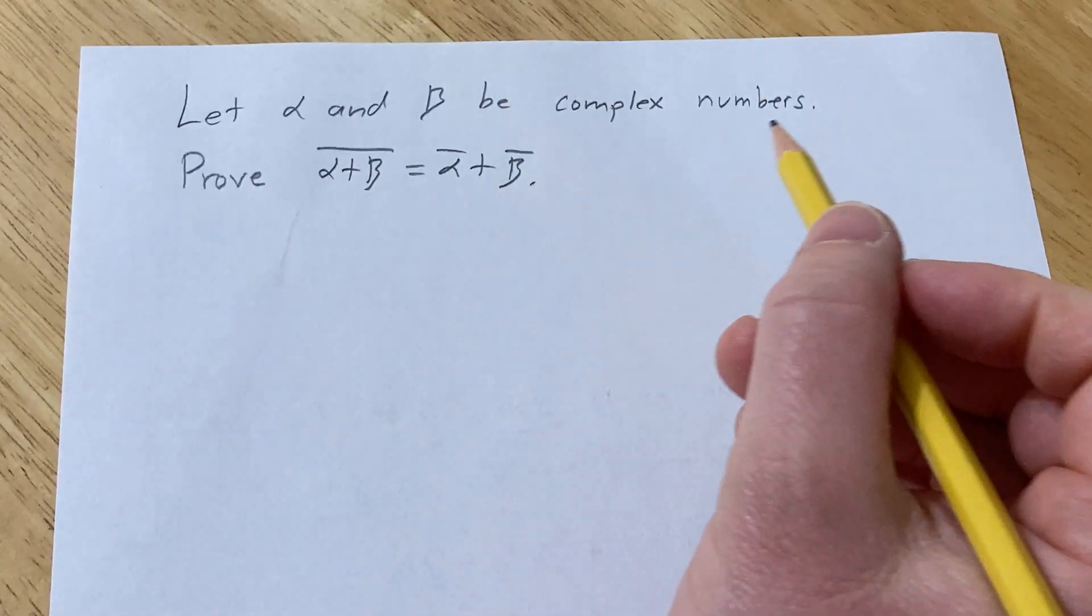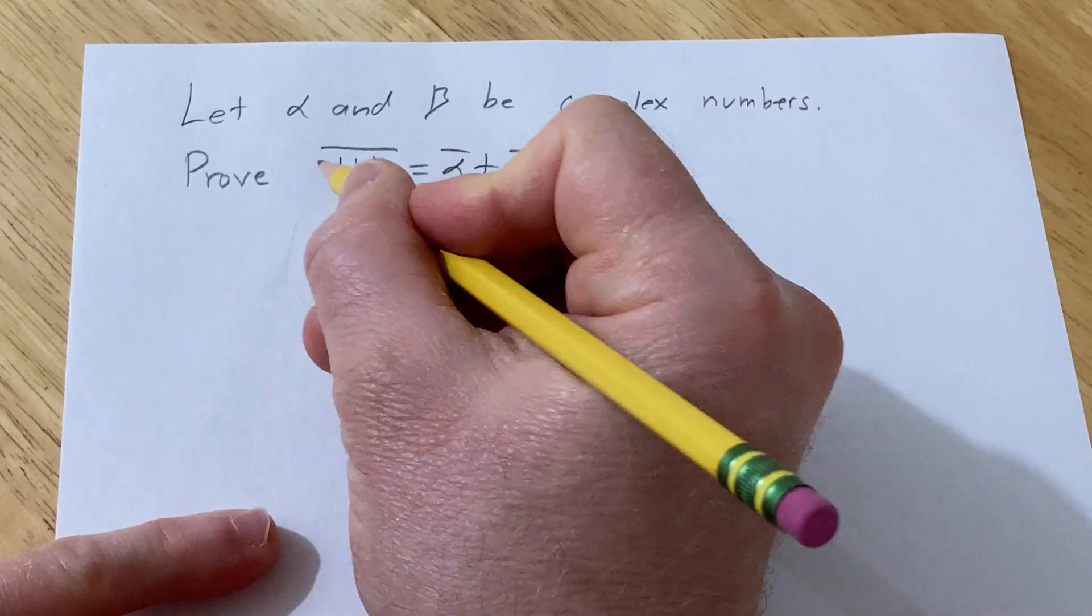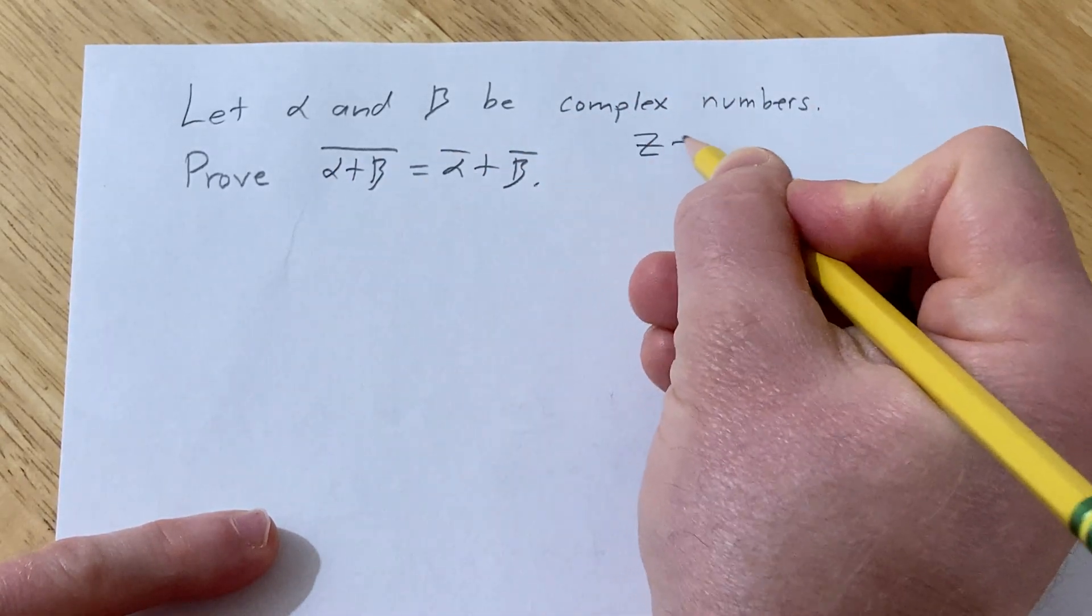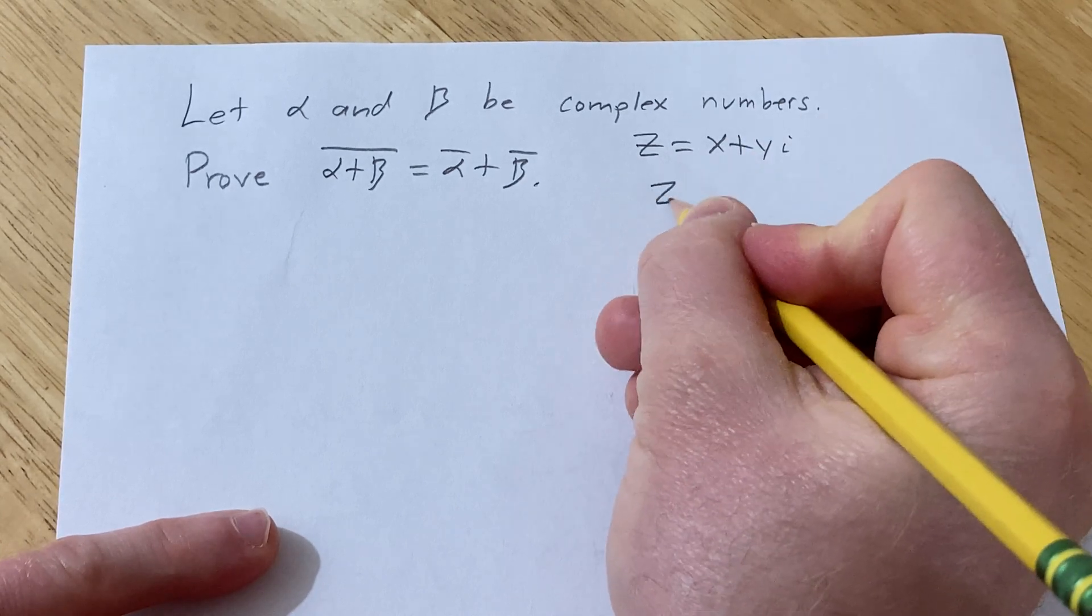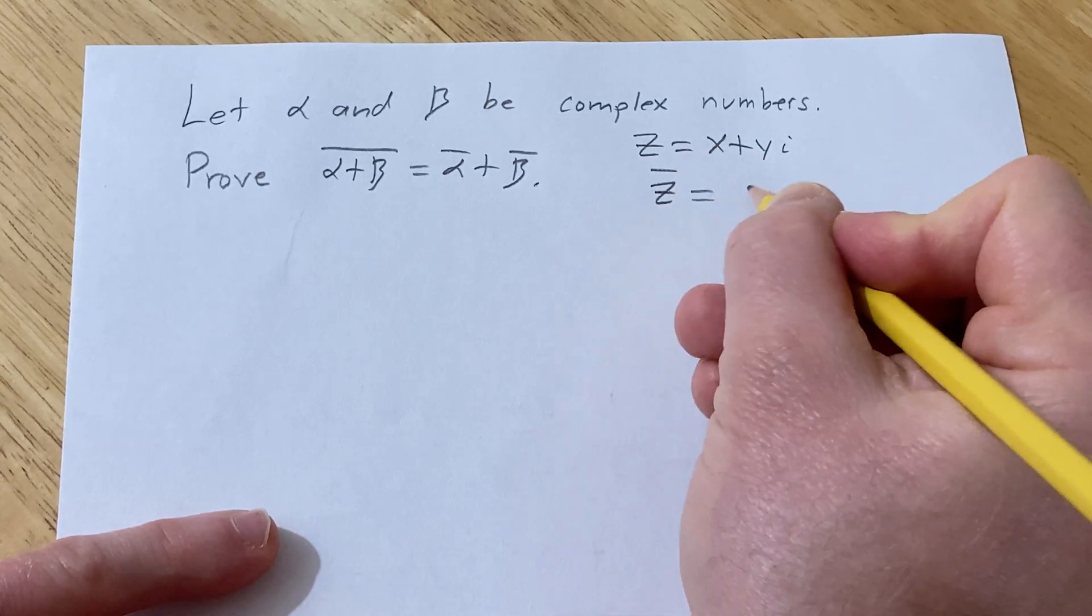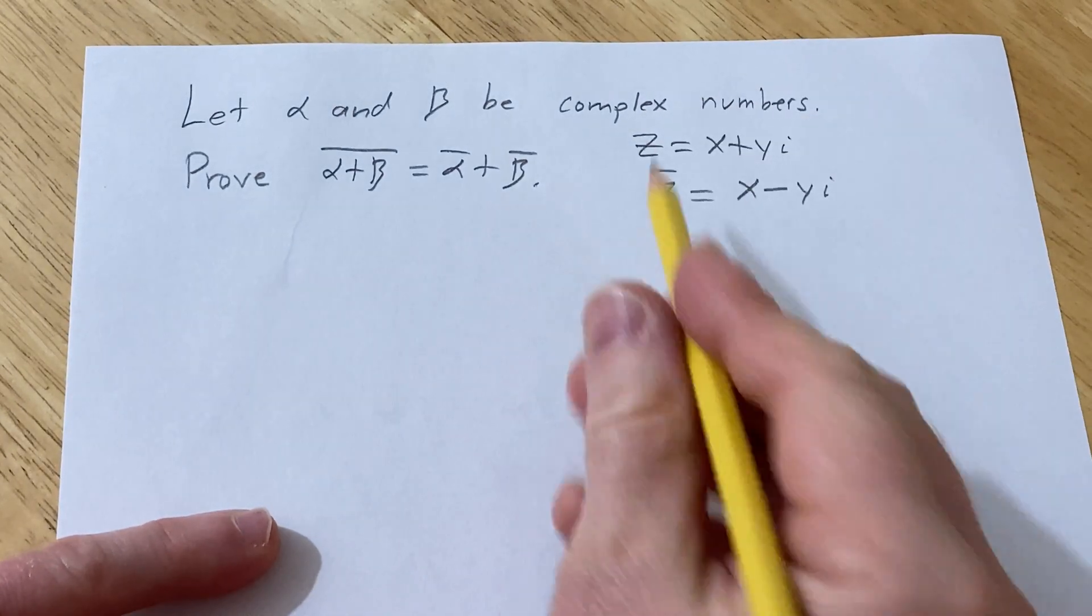This is a really easy proof, but let's just go ahead and go through it. So first recall what this means. If you have a complex number, say x plus yi, the conjugate of the complex number is simply x minus yi. That's all it is.